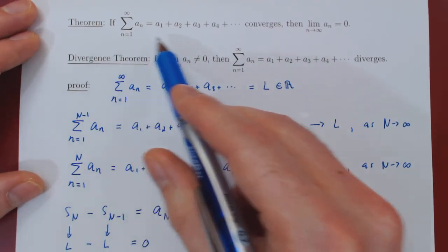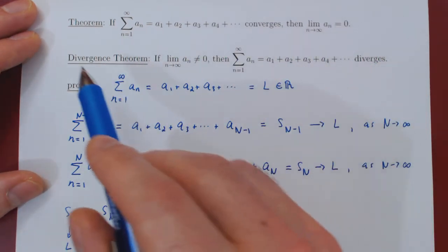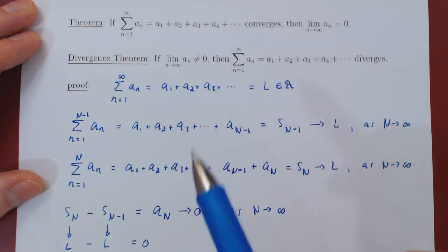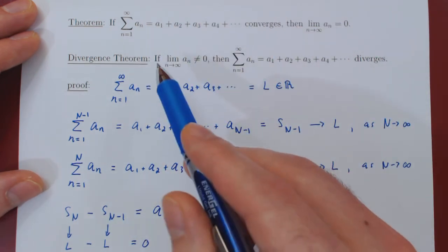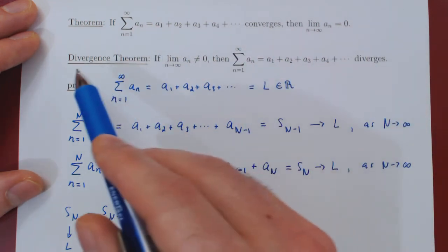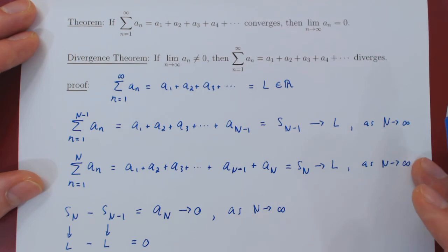So we have proved this result and again because the divergence theorem is simply the contrapositive of this result which we have just proved, it is equivalent, so proving this result automatically also proves the divergence theorem.